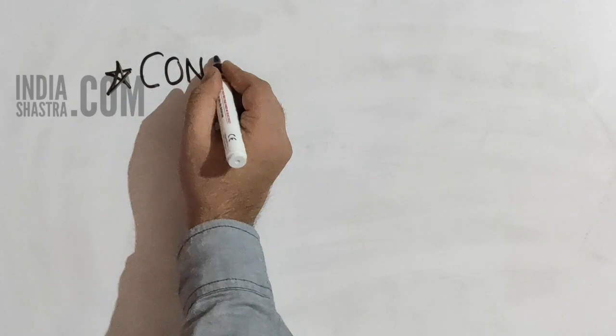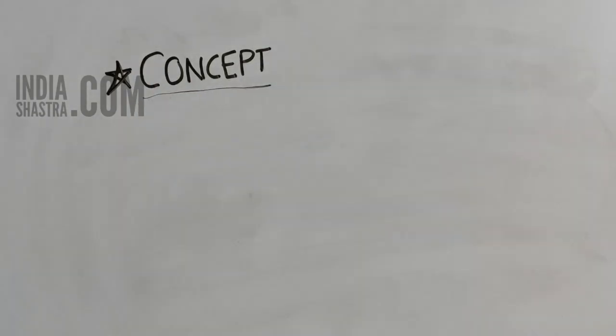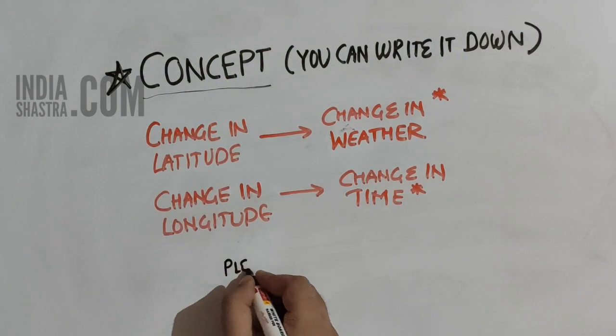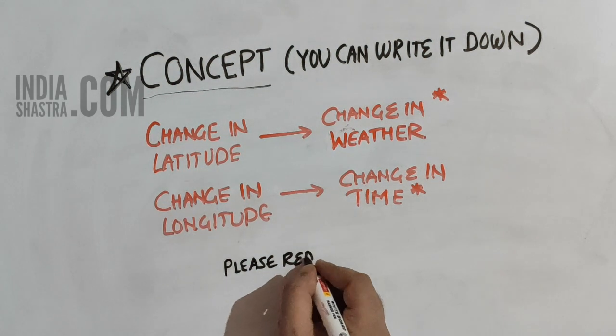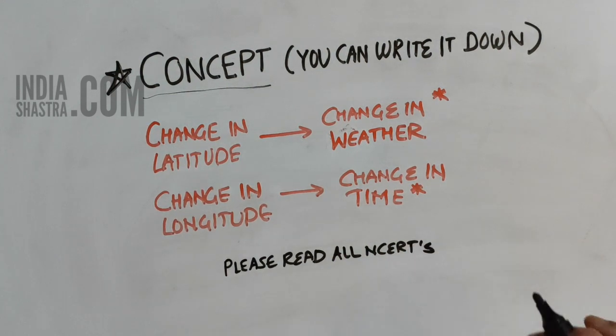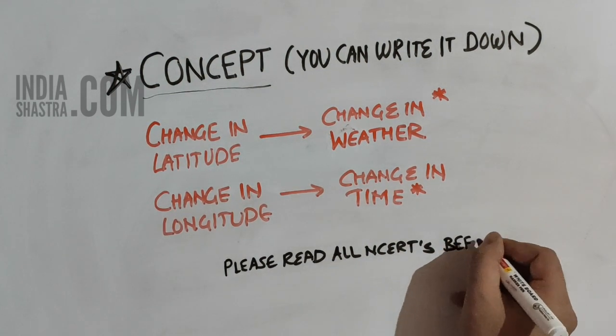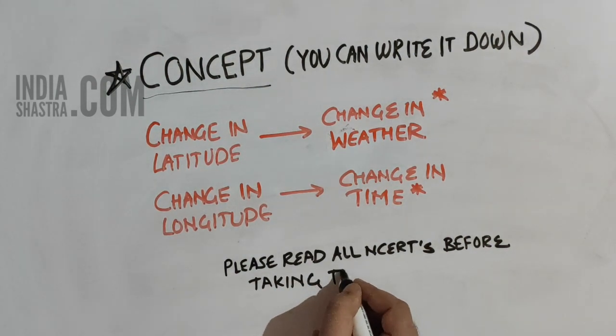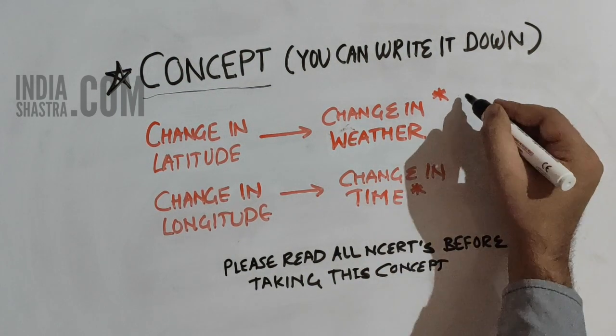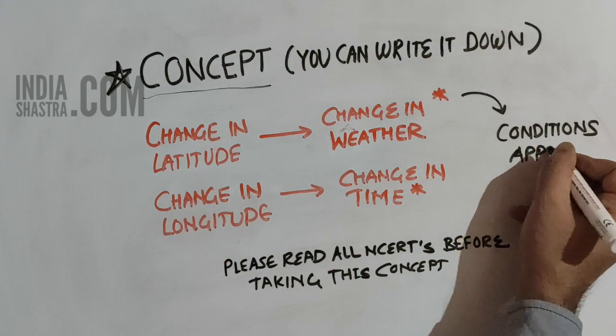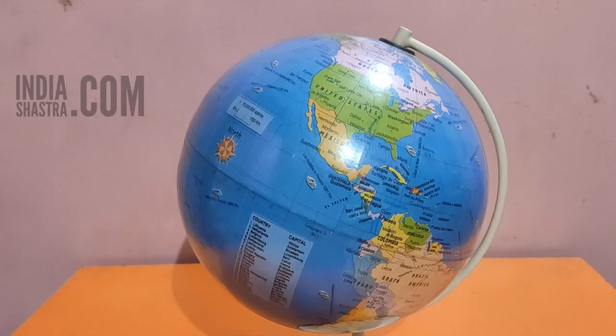After discussing all this, change in longitude is change in time, and change in latitude is change in weather. I would like to repeat this - when longitude changes, you will understand that time is different. And when there is a change in latitude, there will be a change in weather.